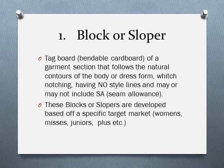A block or sloper is essentially a cutout shape of tag board — basically bendable cardboard, a heavyweight paper cut out like a section of the garment that follows the natural shapes of the body or dress form. It has notching, no style lines, and may or may not include seam allowance. These blocks are developed based on a specific target market — women's, juniors, plus, men's, children's, etc. For example, JLo's slopers have more room in the backside versus a J.Crew style, which is typically a more tailored slim fit.